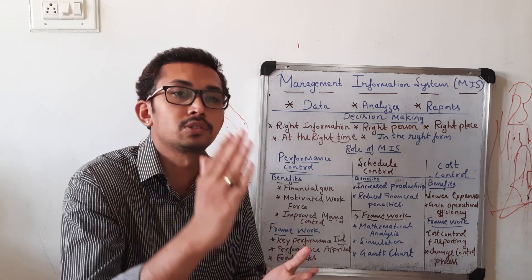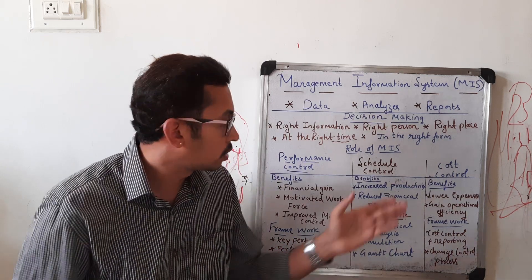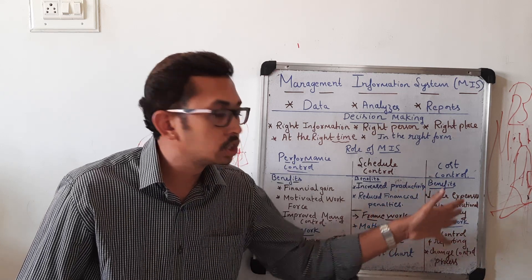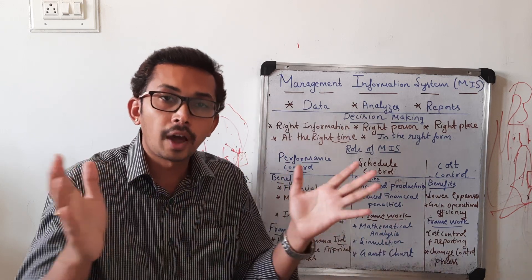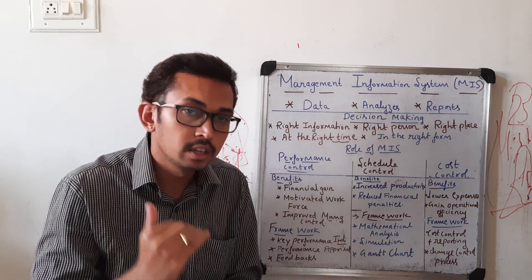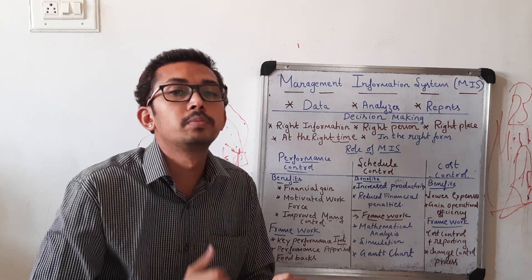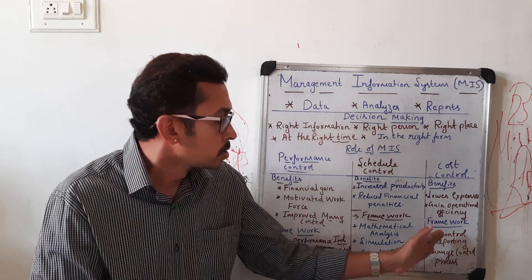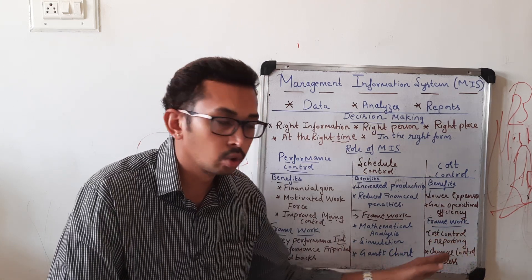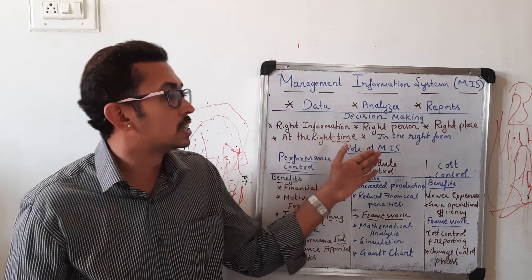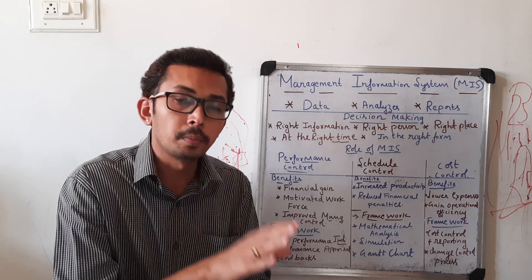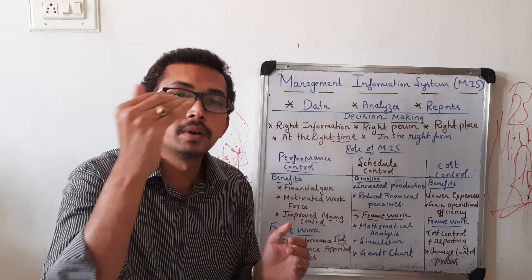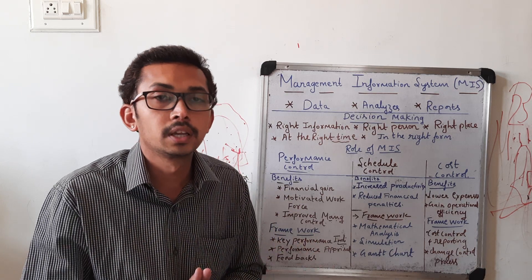Cost control is the process of reducing expenses in an organization to improve profit. The benefits include lower expenses, gaining operational efficiency, and having funds available to invest in new technology or for further expansion. The frameworks used for cost control include cost control reporting and the change control process. Overall, the MIS system helps management and project managers take necessary decisions for the betterment of an organization.